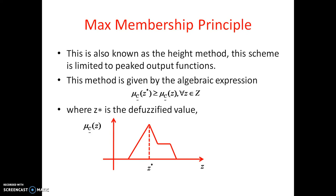The principle is: μ_C(z*) ≥ μ_C(z) for all z belonging to Z. So z* is the required defuzzified value, and it should be greater than or equal to all other values in the set. The z* value is the maximum compared to all others. The condition is it should be a peaked output function — then the peak value gives the defuzzified value.